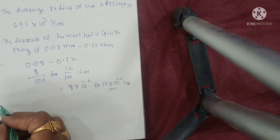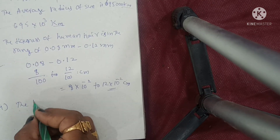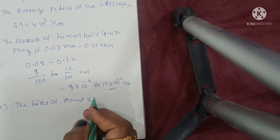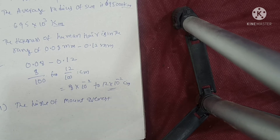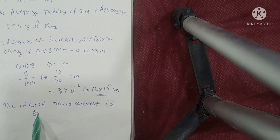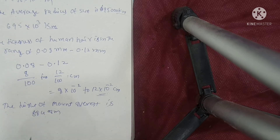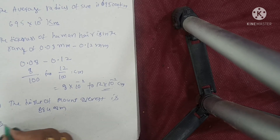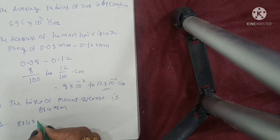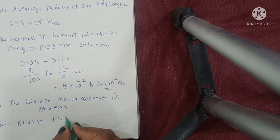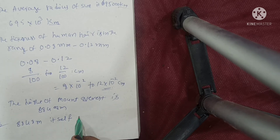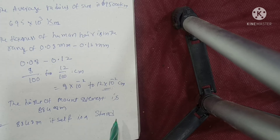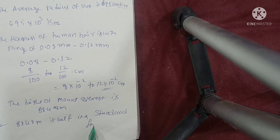Next, fourth one: height of Mount Everest is 8,848 meters. Solution: 8,848 meters itself — what is that? It is already in standard form. Simple.